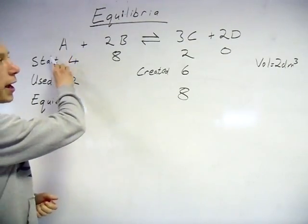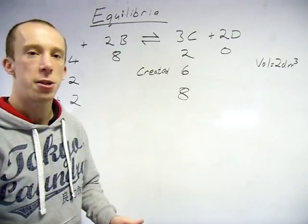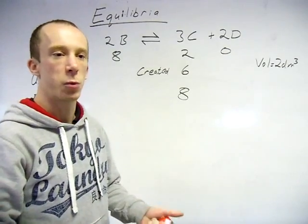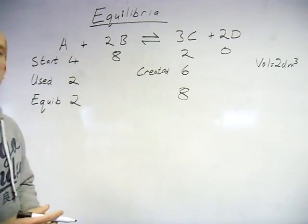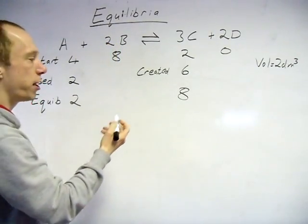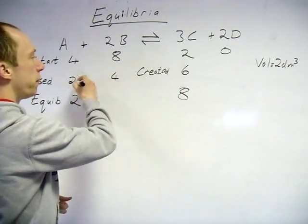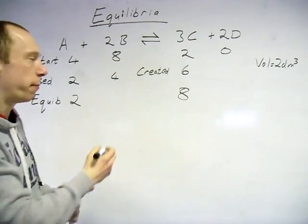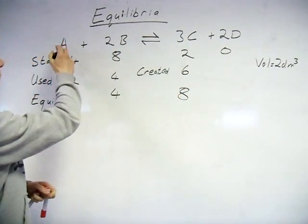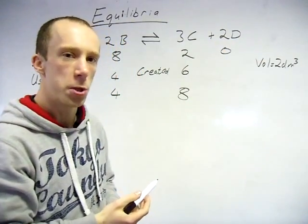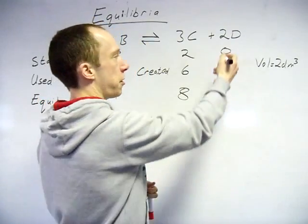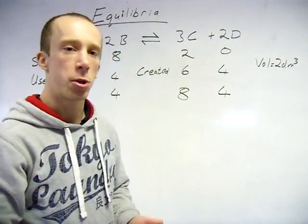I tend to try and get a number with 1 there and then do 1-to-such ratios — they are easier, less chance of slipping up rather than dealing with things like 2 to 5 or 3 to 7. So there's a 1 to 2 ratio of A to B, meaning every time I use up 1 mole of A, I use up 2 moles of B. If I've used up 2 moles of A, I must have used up 4 moles of B — started with 8, used up 4, finished with 4. Comparing A to D: every time I use up 1 mole of A I form 2 moles of D. Used up 2 moles of A, so I form 4 moles of D. Started with 0, made 4, so at equilibrium there are 4 moles of D.